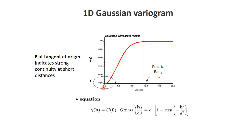The Gaussian variogram is the opposite — it goes slower than linear and is much flatter at the origin. Again, it also has that practical range.